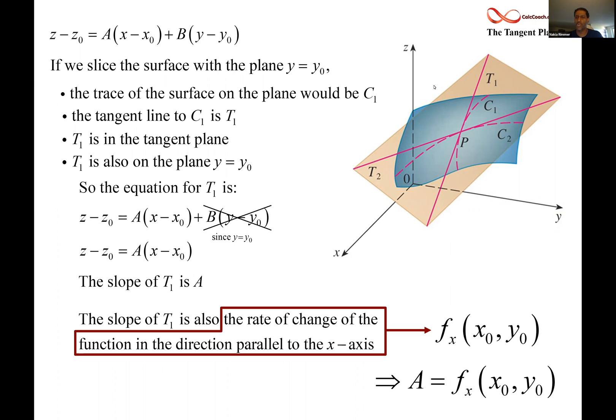Say all that to say that capital A is your x partial. We can redo this whole thing by slicing with the plane x equals x naught, getting curve C2, getting tangent line T2, plugging it in and figuring out that capital B will be left over because capital A will be gone at that point. And we'll find that capital B would be the y partial evaluated at x naught, y naught.